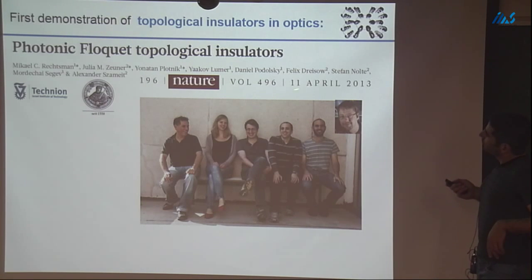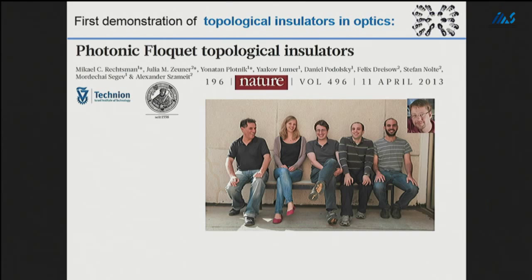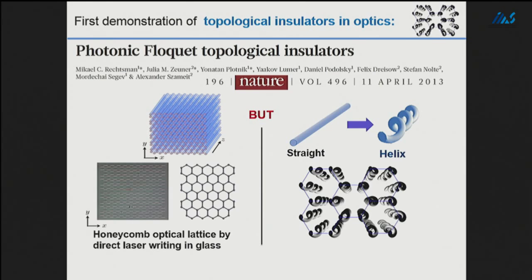In 2013, the first realization of topological insulators in optics was achieved by our group in collaboration with Alex Szameit's group in Jena. We took an array of waveguides arranged in a honeycomb fashion, but we needed to add a twist — because we need to break time reversal symmetry, we literally added a twist and used helical waveguides instead of straight waveguides. The helicity basically introduces an equivalent to a magnetic field.